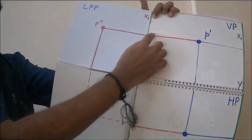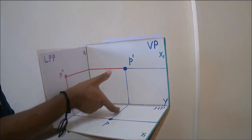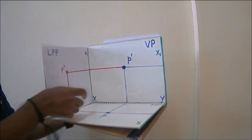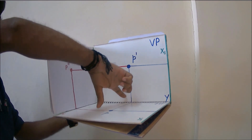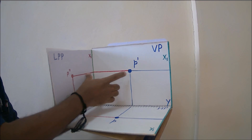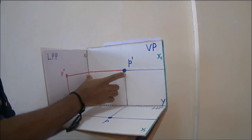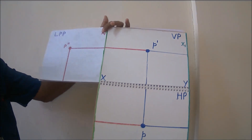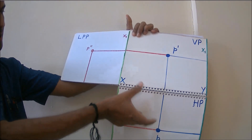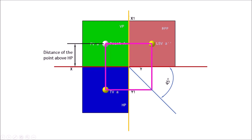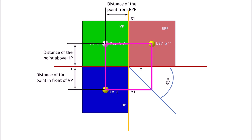Observe that the front view and profile view are horizontally aligned. The distance of point P above the horizontal plane equals the distance of front view P dash above the XY line. The distance of point P in front of the vertical plane equals the distance of top view P below the XY line. The distance of the point from the profile plane equals the distance of the X1Y1 line from the line joining front view P dash and top view P. In the 2D drawing, we can specify the distance of the point above HP, the distance in front of VP, and the distance from the right profile plane.